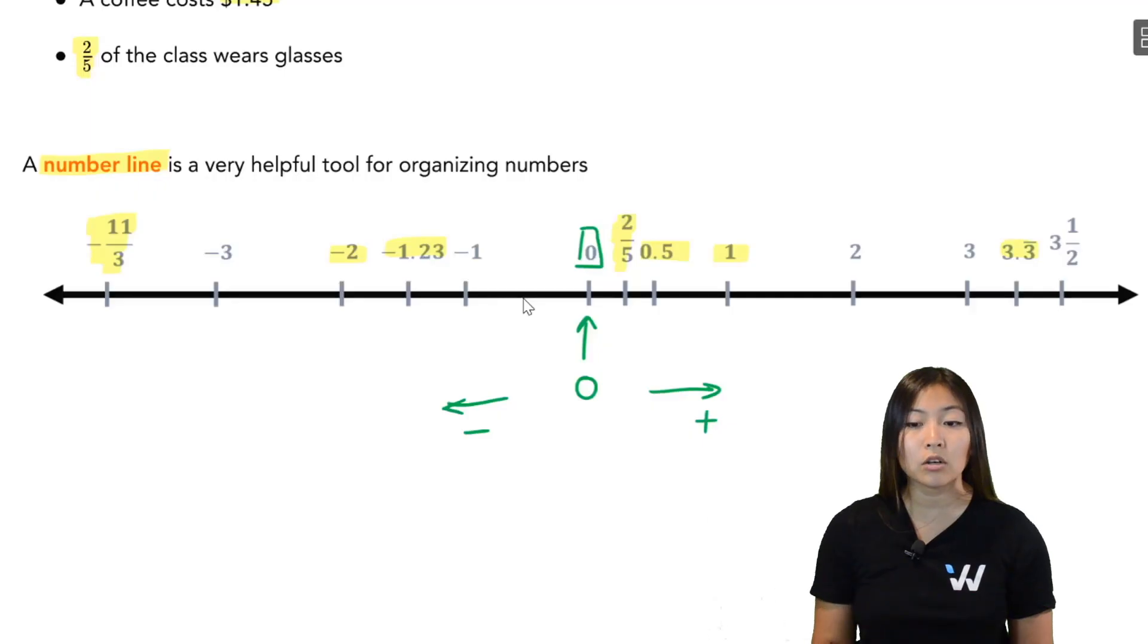Now numbers on the right are larger than numbers on the left. So for example, 2 is to the right of negative 3. So even though 3 looks bigger, because it's negative, it's to the left of 2. 2 is bigger than negative 3.